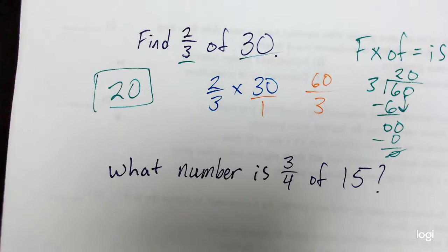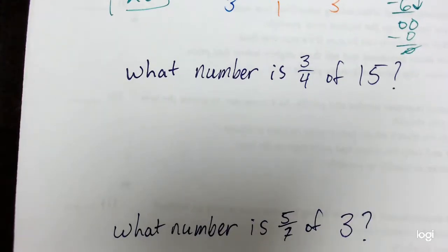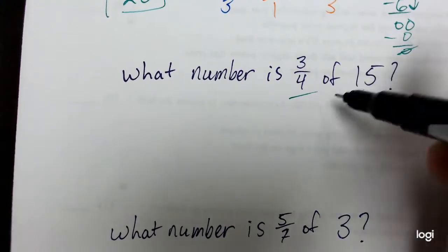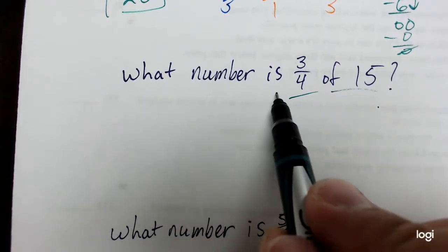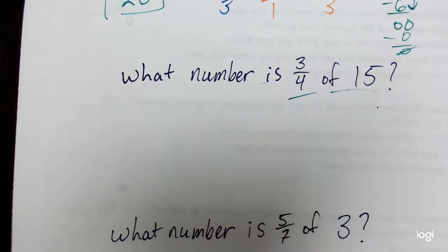Now let's see. How can I use fraction times of equals is down here? Well, I have the fraction of 3/4. My of number is 15. So 3/4 times 15 will find out what my number is or my is number. Does everyone see that? Great.